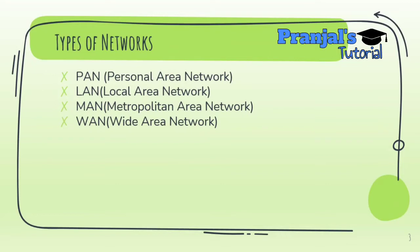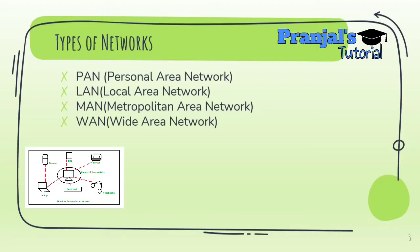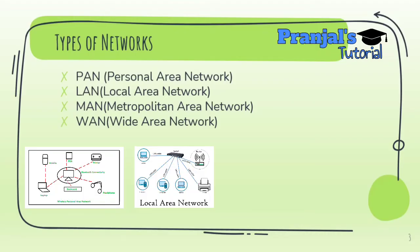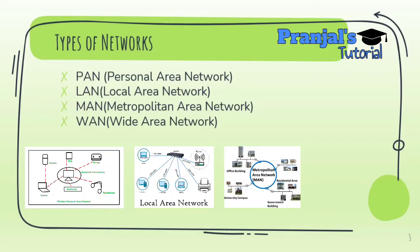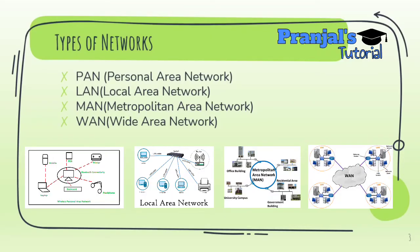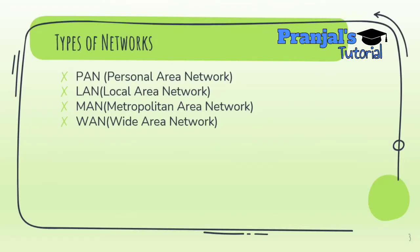Types of computer networks. There are 4 major types of computer networks. First, PAN — Personal Area Network. Next, LAN — Local Area Network. Third, MAN — Metropolitan Area Network. And fourth, WAN — Wide Area Network. These networks are classified based on the geographical area each network covers.